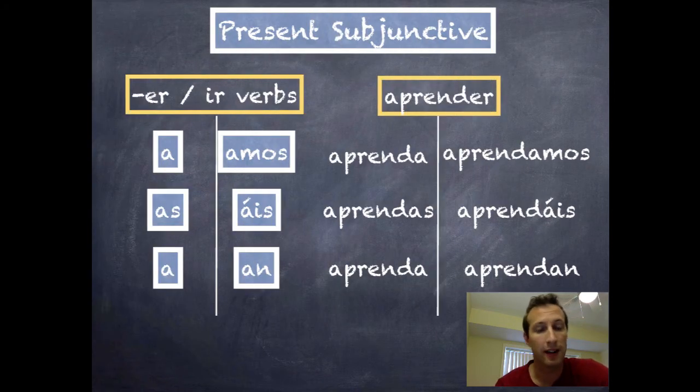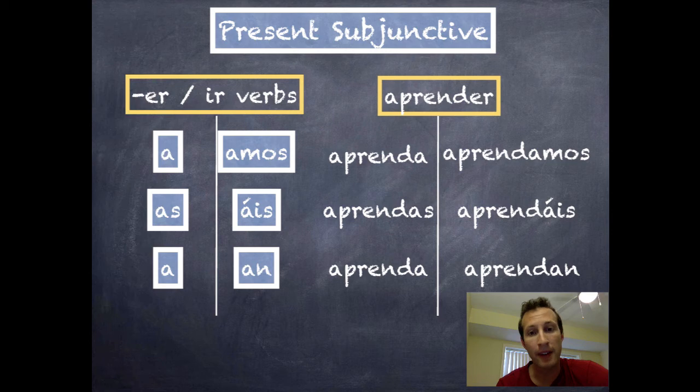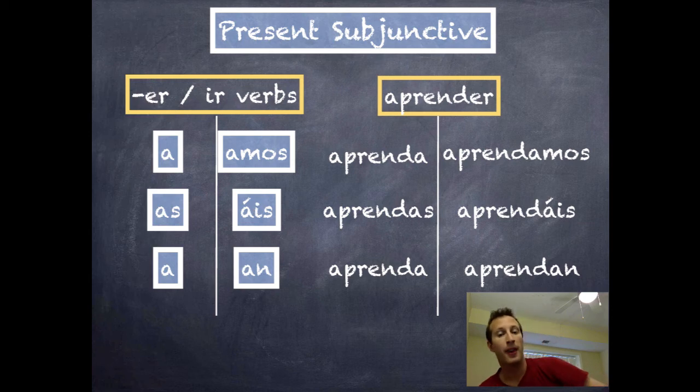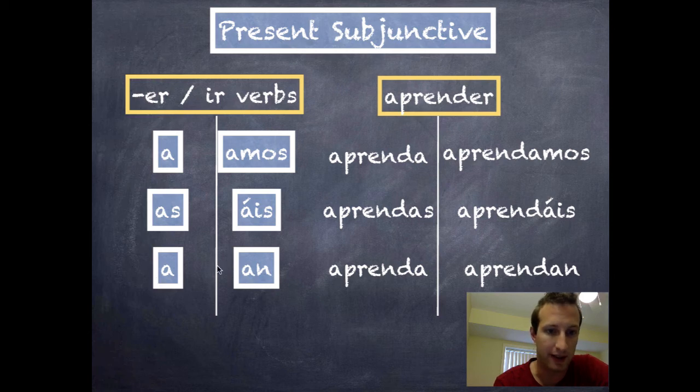Similarly, here in the ER/IR, we see that these, except for the YO, are the AR verbs. AS, AH, AMOS, EIS, EN, are the AR endings for the indicative tense, so those get used for the subjunctive. Again, these are almost identical to the imperative ones.